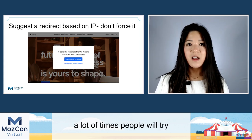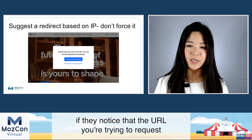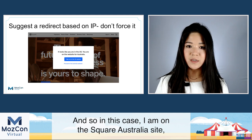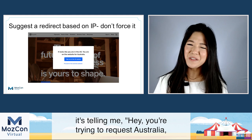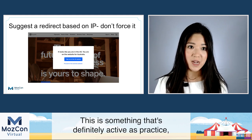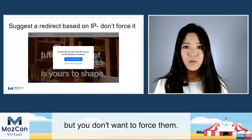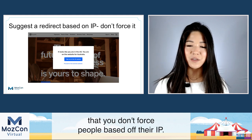As a catch-all, a lot of times people will have modals pop up if they notice the URL you're requesting doesn't match the country code you're in. For example, on the Square Australia site it says 'Hey, you're trying to request Australia, but it looks like you're in the US.' This is best practice — it's good to suggest people redirect, but you don't want to force them. Remember, Googlebot comes from the US, so it's really important that you don't force redirects based on IP.